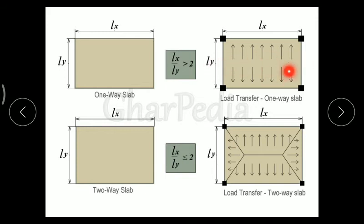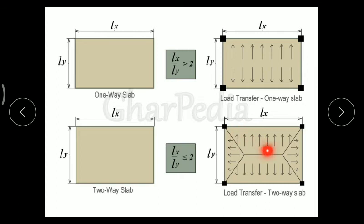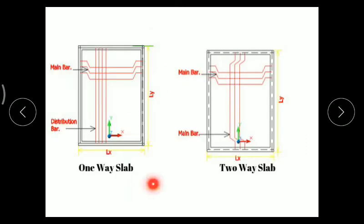The load distribution in a one-way slab is uniform — half the load transfers to the supporting beam. In the case of a two-way slab, the load distribution to the longer beam is trapezoidal, and to the shorter beam it is triangular. This is a typical view comparing one-way slab and two-way slab.